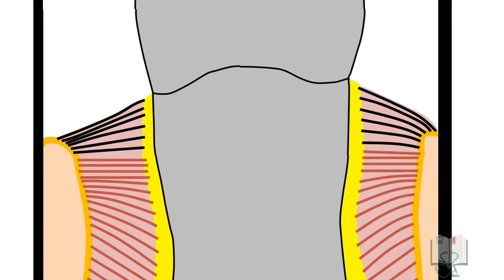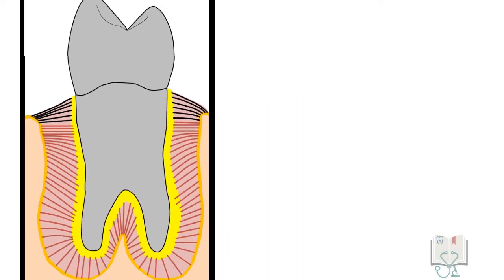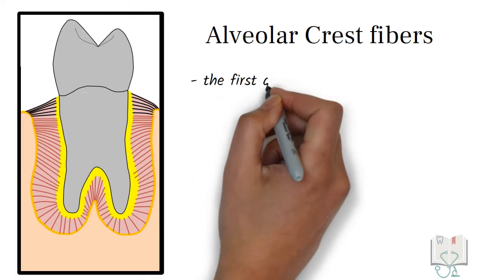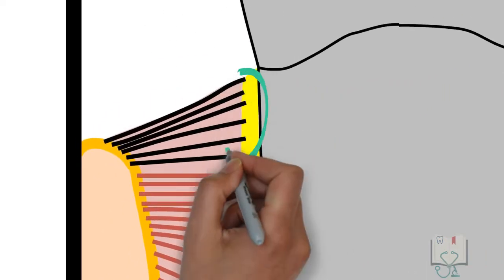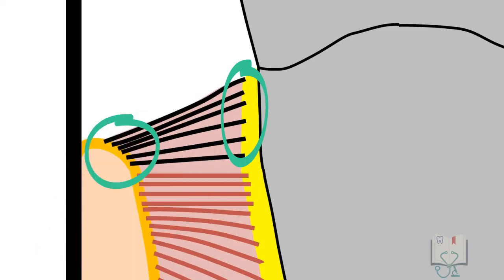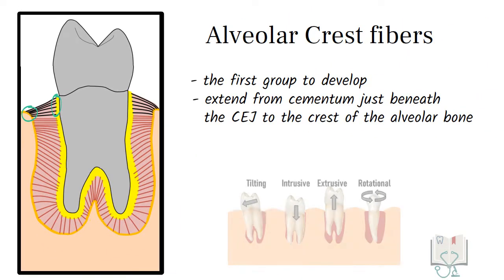Let us start with the first group of fibers. Alveolar crest fibers. They are the first group to develop. They extend from the cementum just beneath the cementoenamel junction to the crest of the alveolar bone. These fibers resist tilting, intrusive, extrusive and rotational forces.